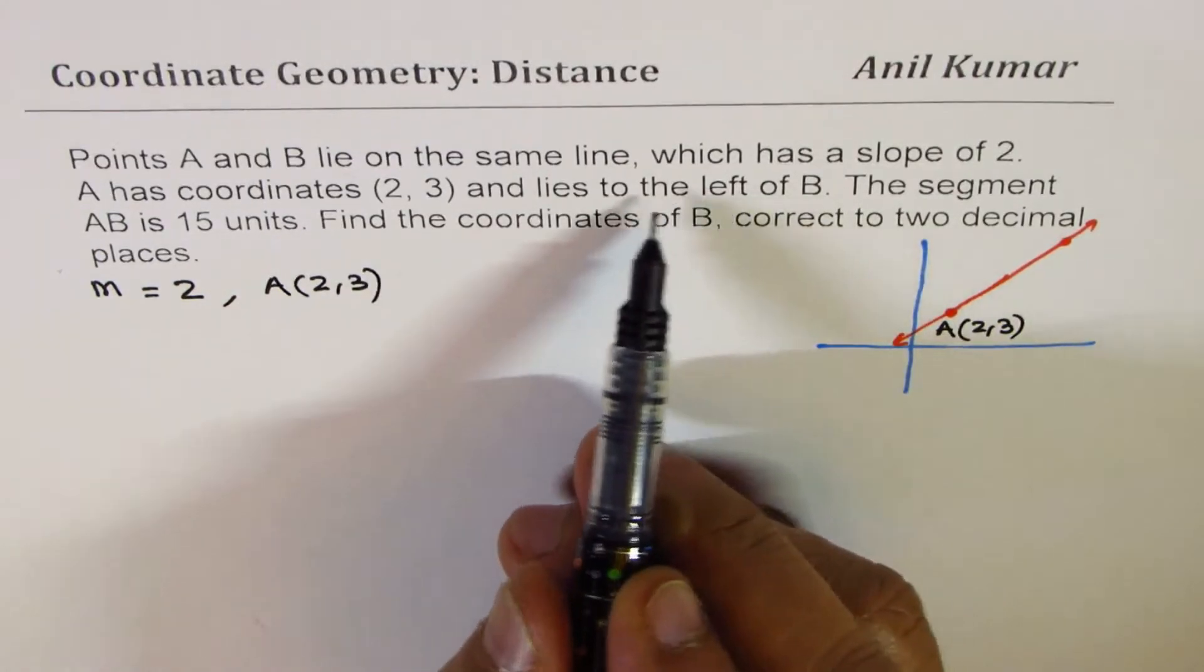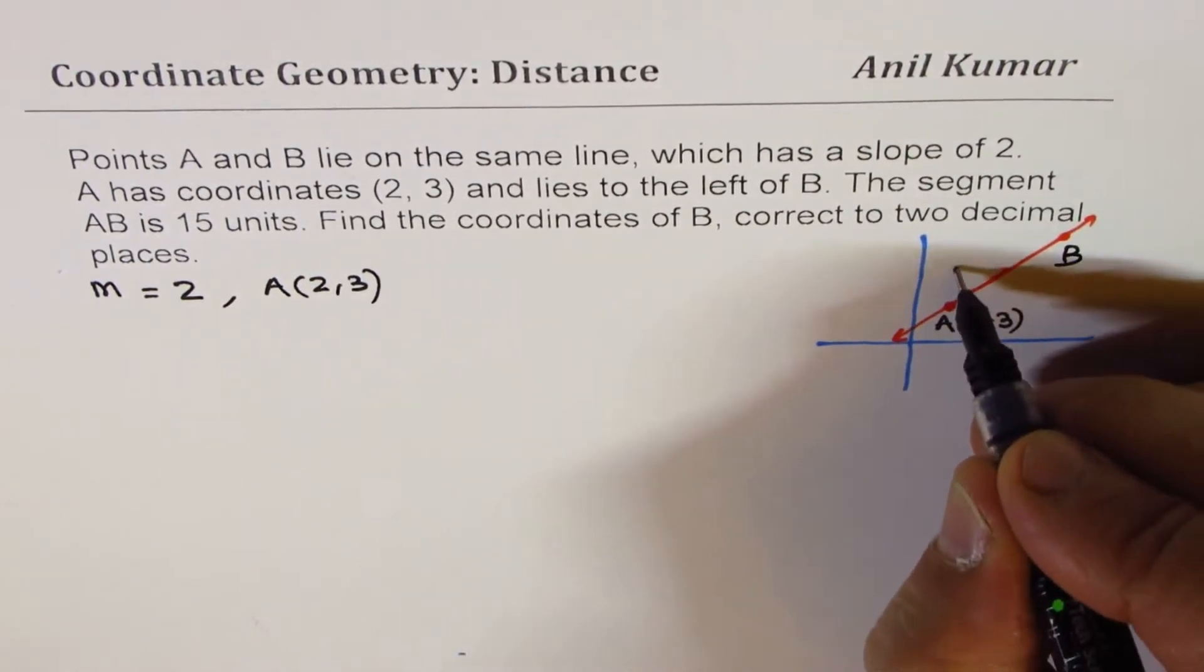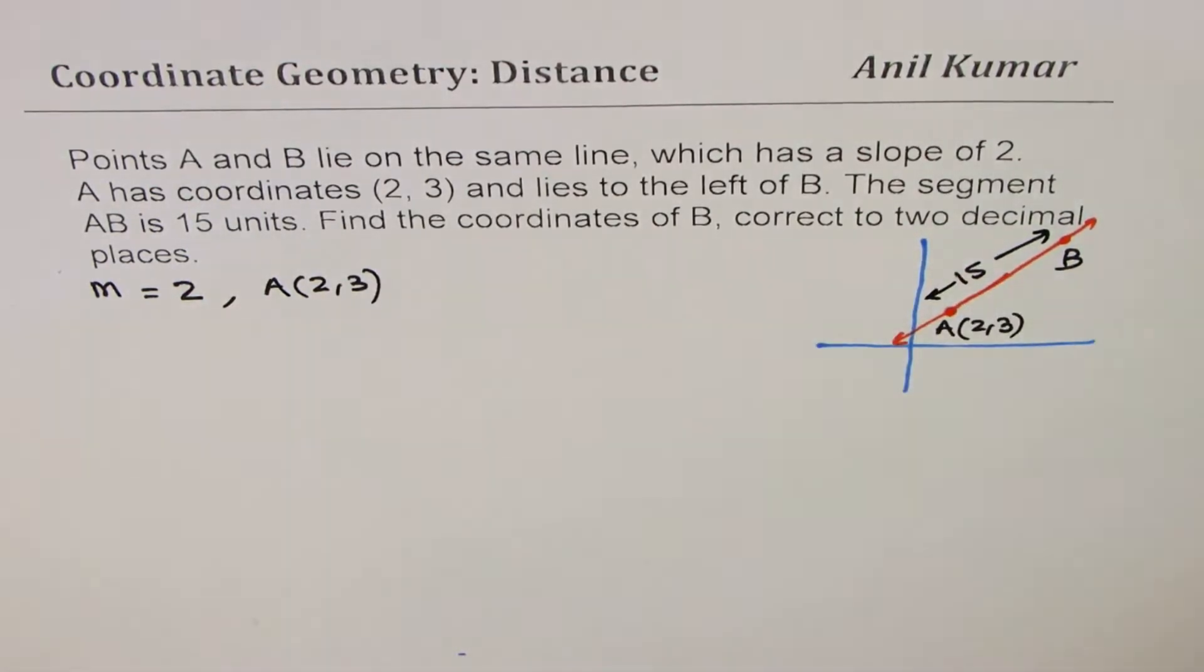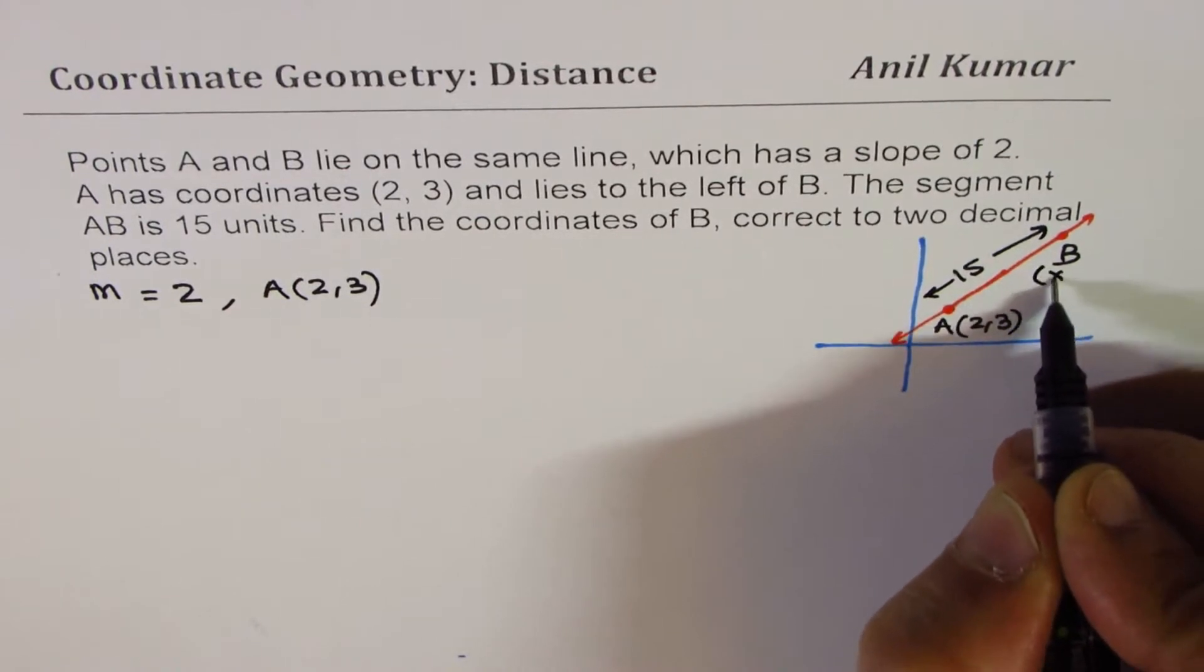We are also given that the point B, somewhere here on the right side of A, is 15 units away. We need to find coordinates of B, so we will write B as (x, y).